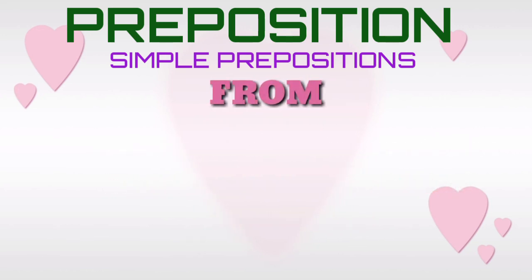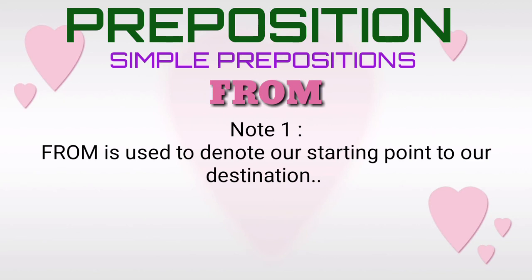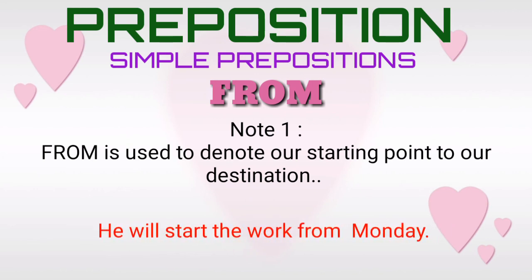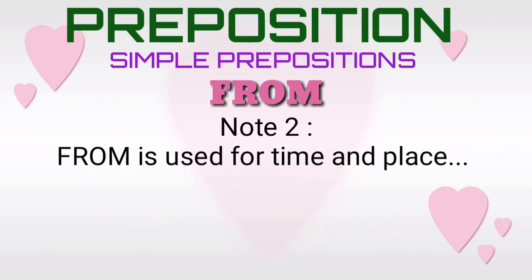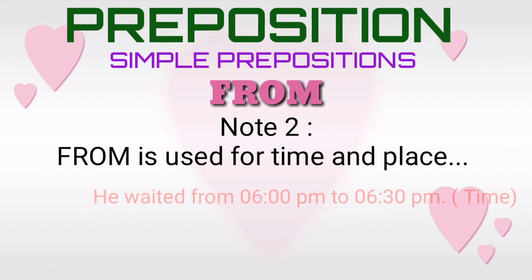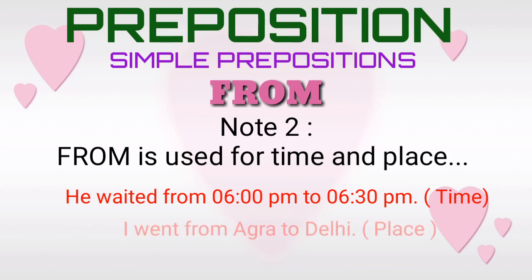Simple preposition 'from', note one. The simple preposition 'from' is used to denote our starting point to our destination. For example: 'He will start the work from Monday.' Note two. The simple preposition 'from' is used for time and place. For example: 'He waited from 6 p.m. to 6:30 p.m.' 'I went from Agra to Delhi.' Here the simple preposition 'from' is used for time and place.